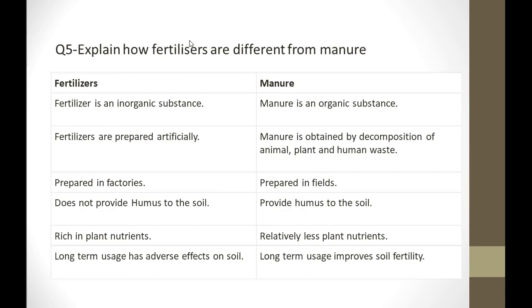The next question is: explain how fertilizers are different from manure. Fertilizers are inorganic substances, while manure is organic. Fertilizers are artificially prepared in labs, while manure is biodegradable waste — such as human excreta, animal waste, plant waste, and vegetable peels. Fertilizers do not provide humus to the soil.